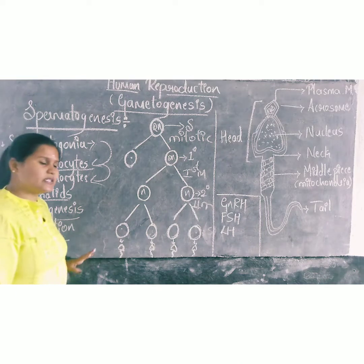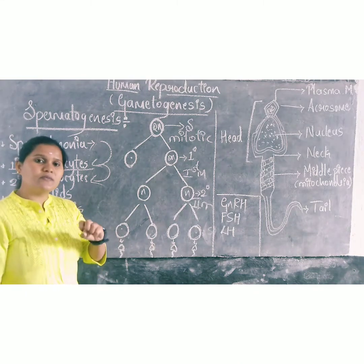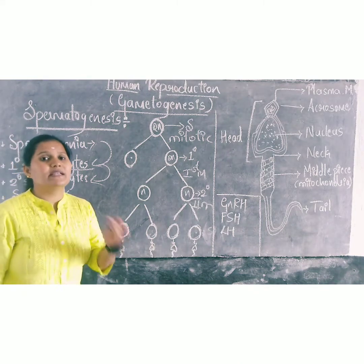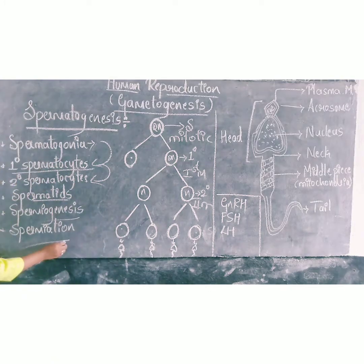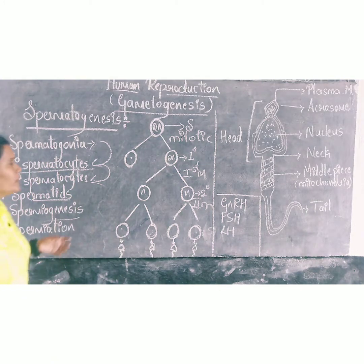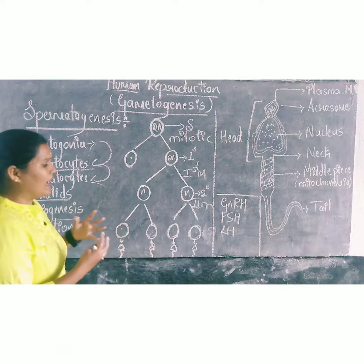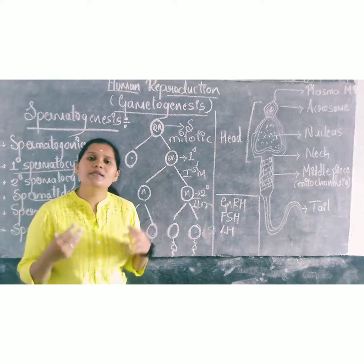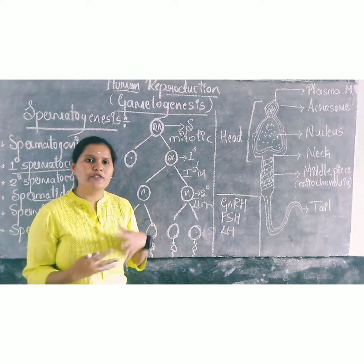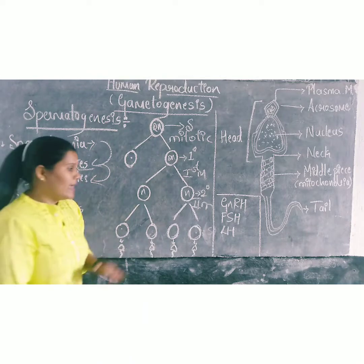Spermiogenesis is when the sperm gets released from the seminiferous tubules. That is called spermiation. In order to accomplish all these processes, there are some hormones which act on spermatogenesis.